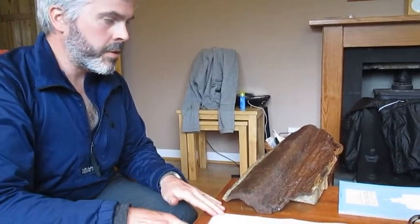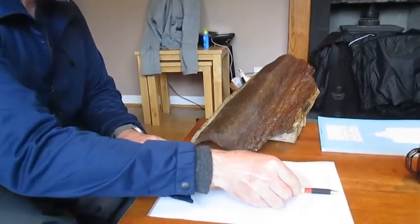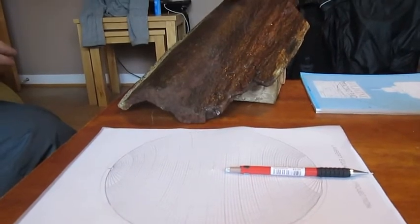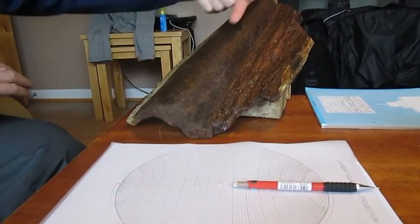We're going to pretend this is all in the field. I have the stereonet here, so we're going to pretend this is in situ and that this is north. What we can see is that the fold axis is plunging gently to the southeast.